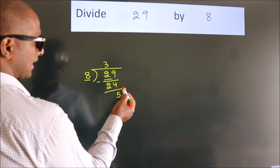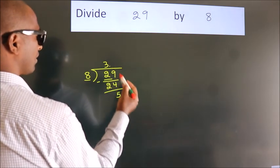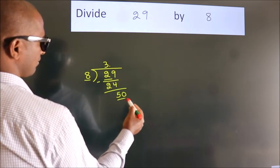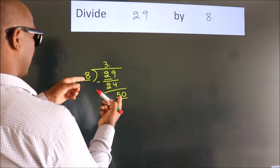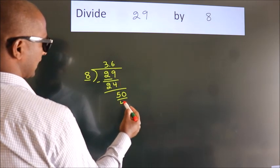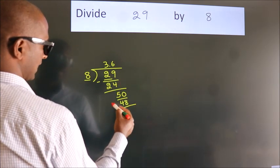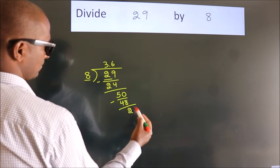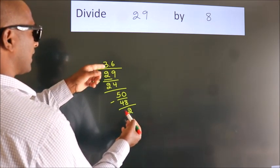No more numbers to bring down, so what we do is put a dot and take 0. So 50. A number close to 50 in the 8 table is 8 times 6, which is 48. Now we subtract. We get 2. After this, we already have the decimal,